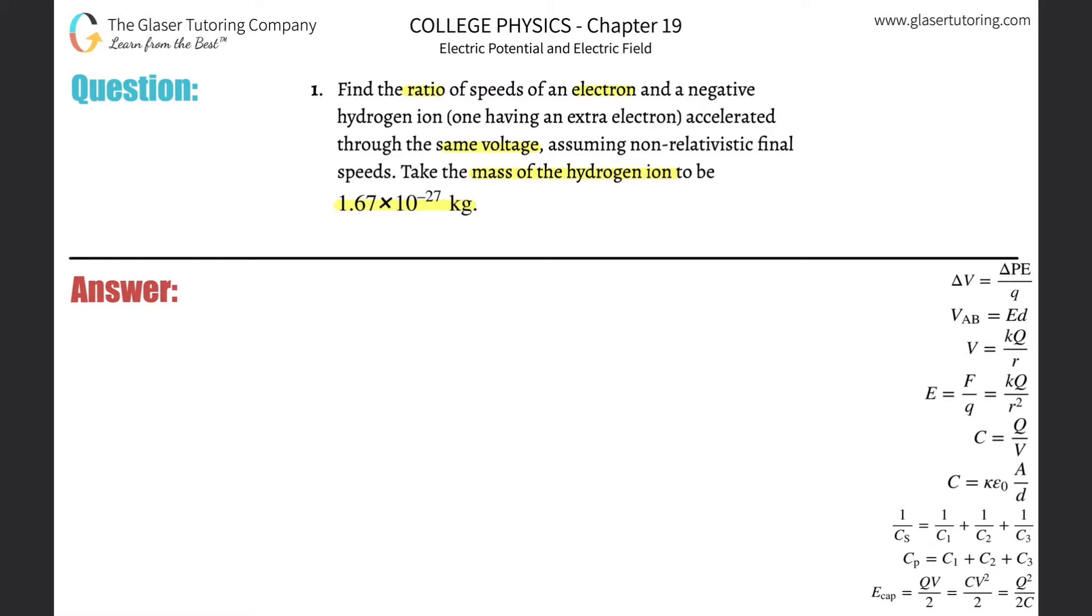What a way to be back, can't even read the problem. Anyway, so what we realize here is that we're going to have an electron, so we'll label that just E minus, and then we're going to have a hydrogen ion. Hydrogen has one proton in the middle, and it's going to have basically two electrons now on the outside.